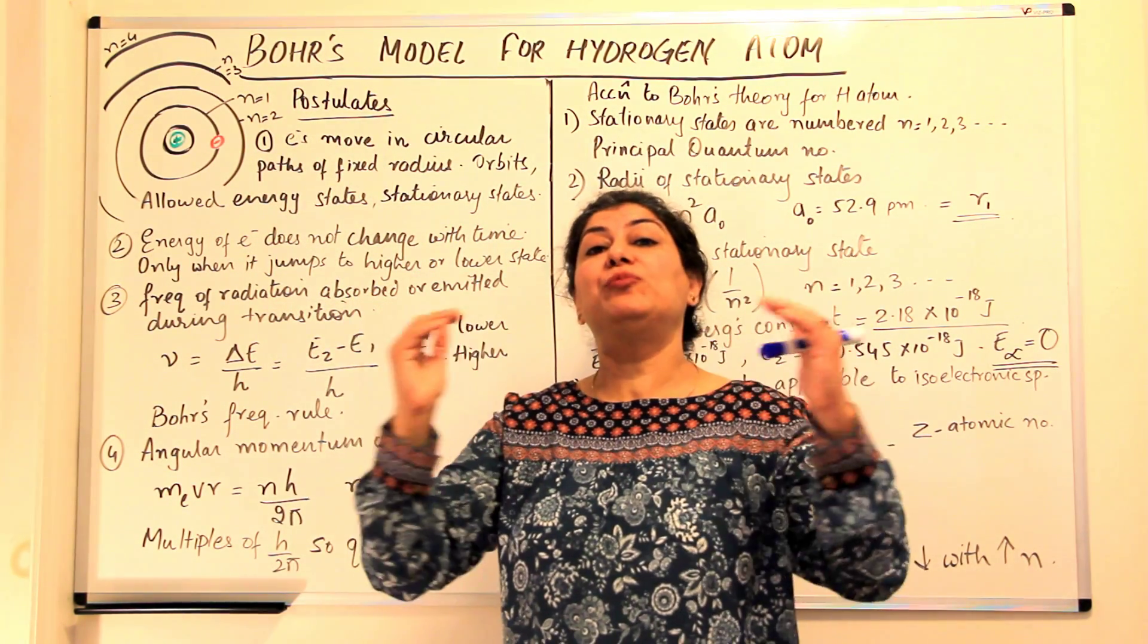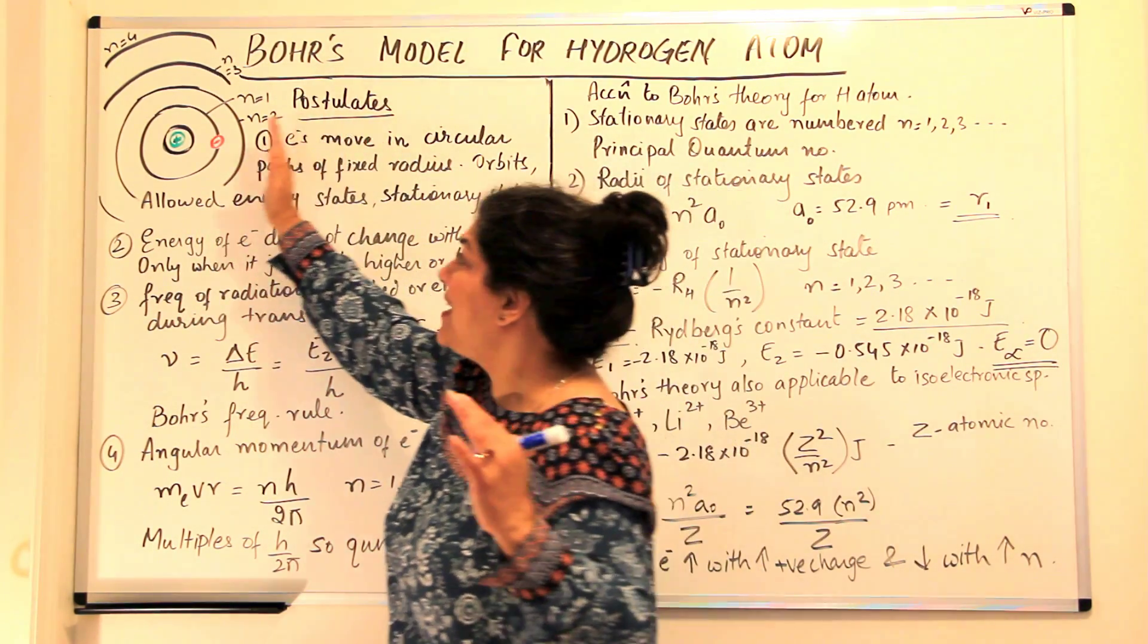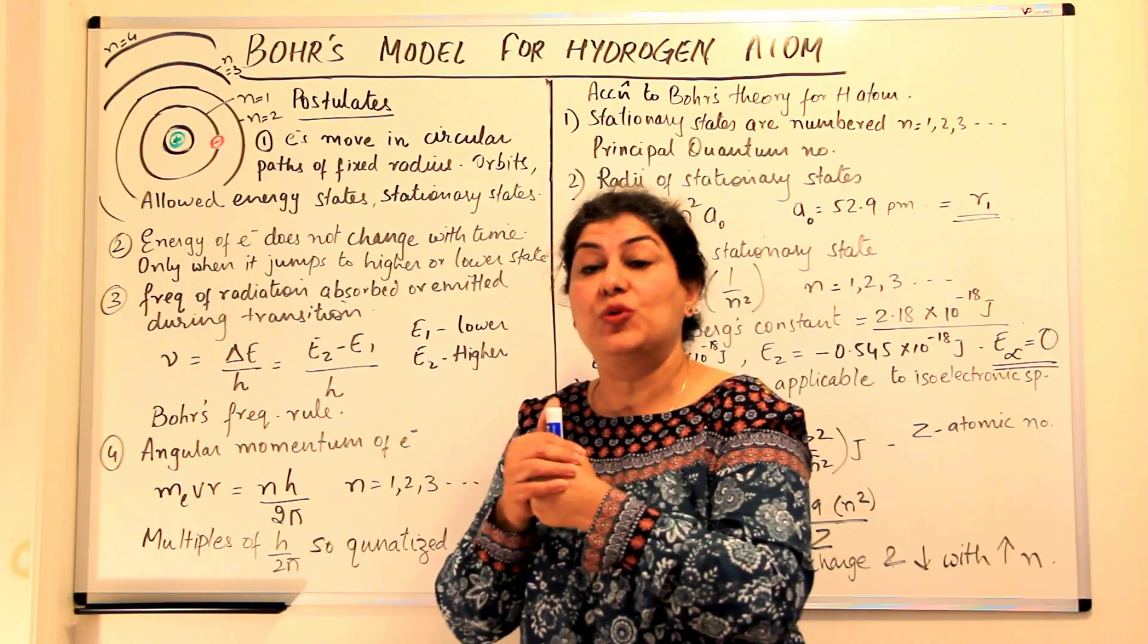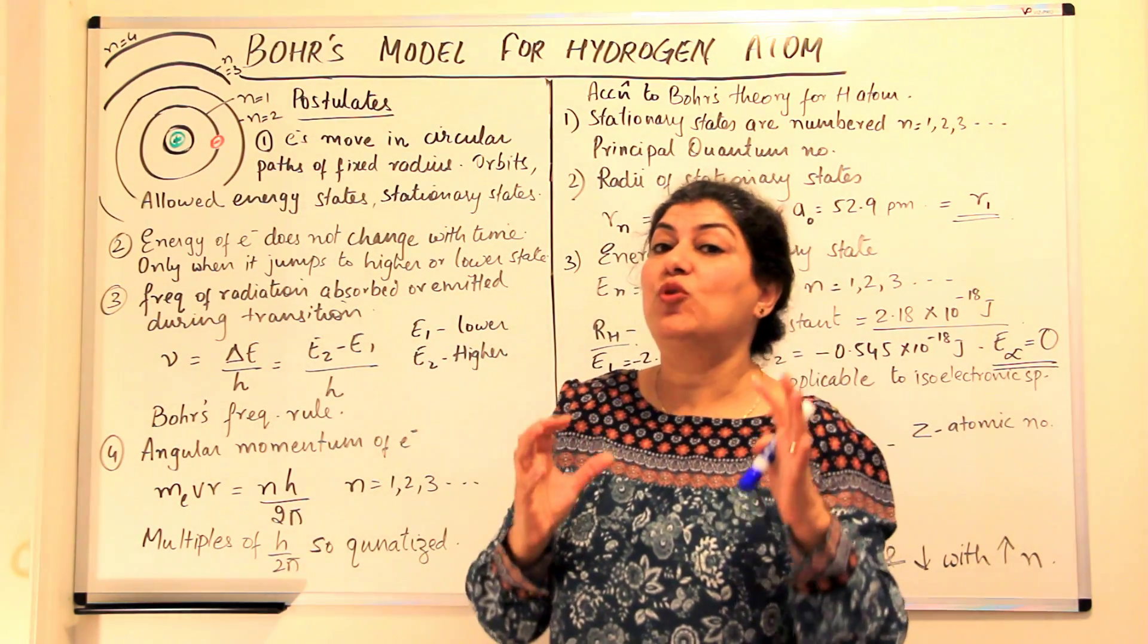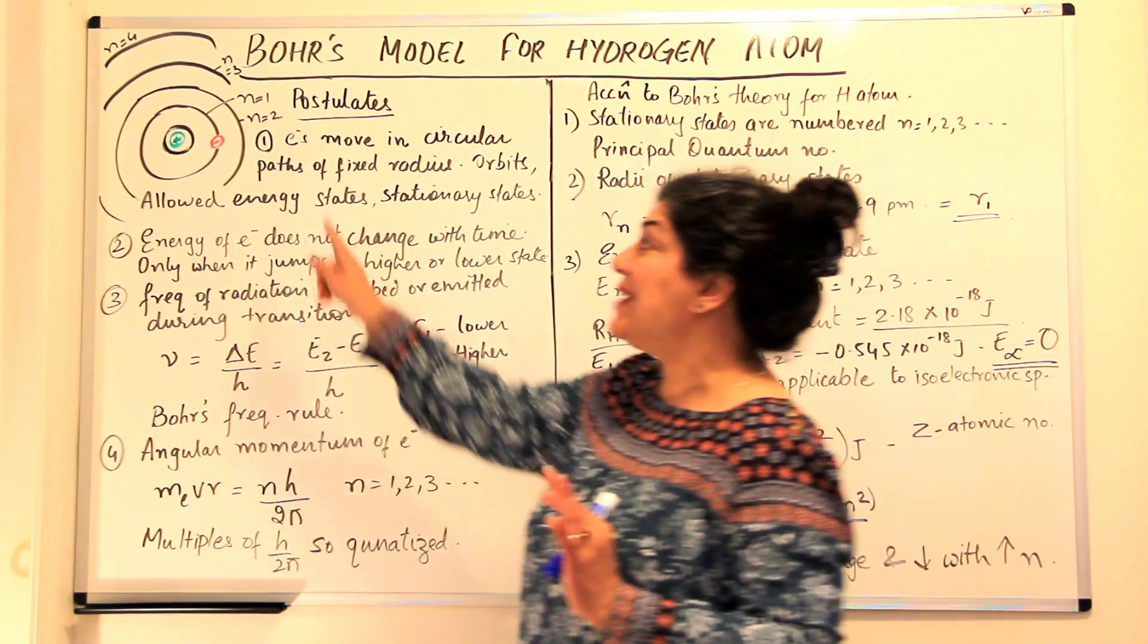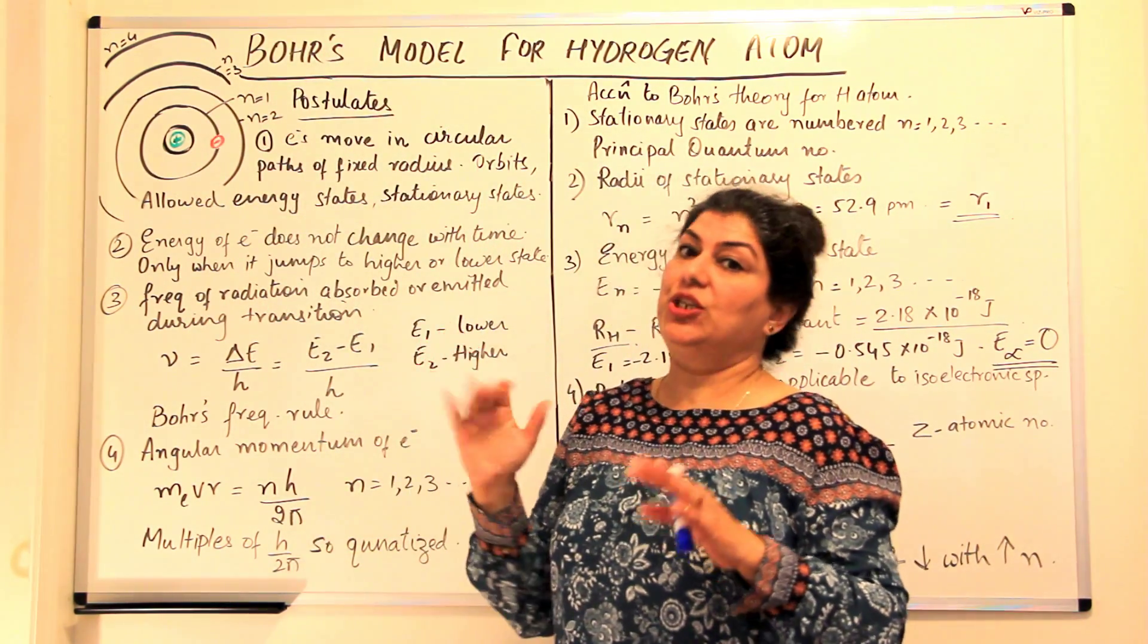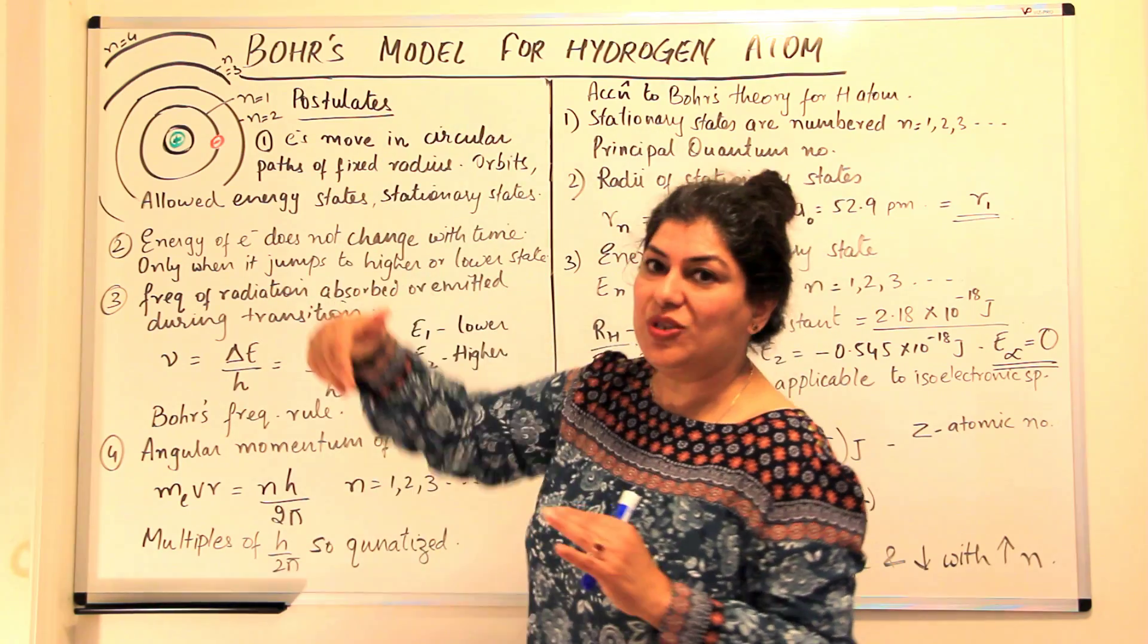As you move away from the nucleus, the energy state increases. The energy of the energy state increases and as the electron comes closer, it loses energy. It acquires stability. The closer an electron is to the nucleus, the more it is attracted by the positive charge of the nucleus and hence it is more stable. So the energy of an electron does not change as long as it is moving in the same orbit. But as soon as it jumps from a lower energy level to a higher energy level, it absorbs energy and jumps to a higher energy state. And when it loses energy, it jumps back to the original state or to a lower energy state.